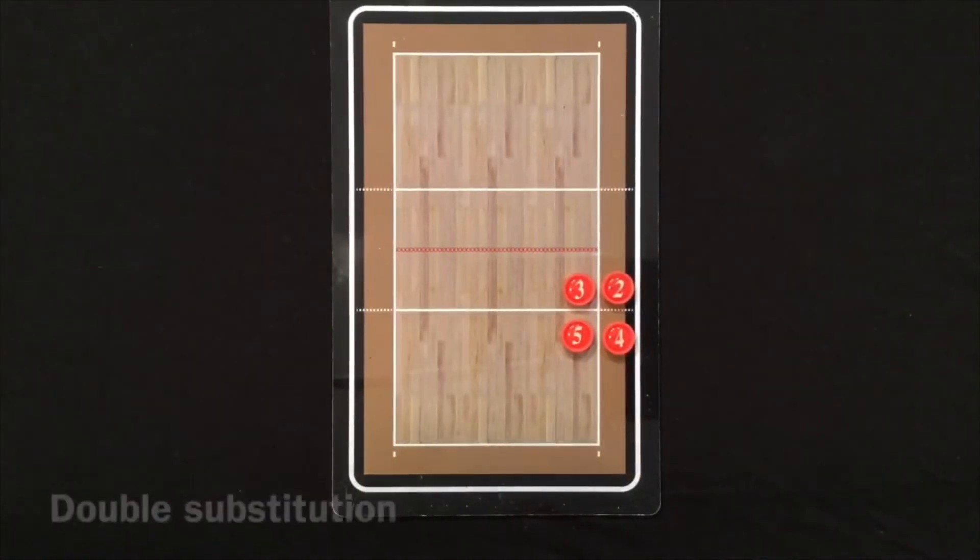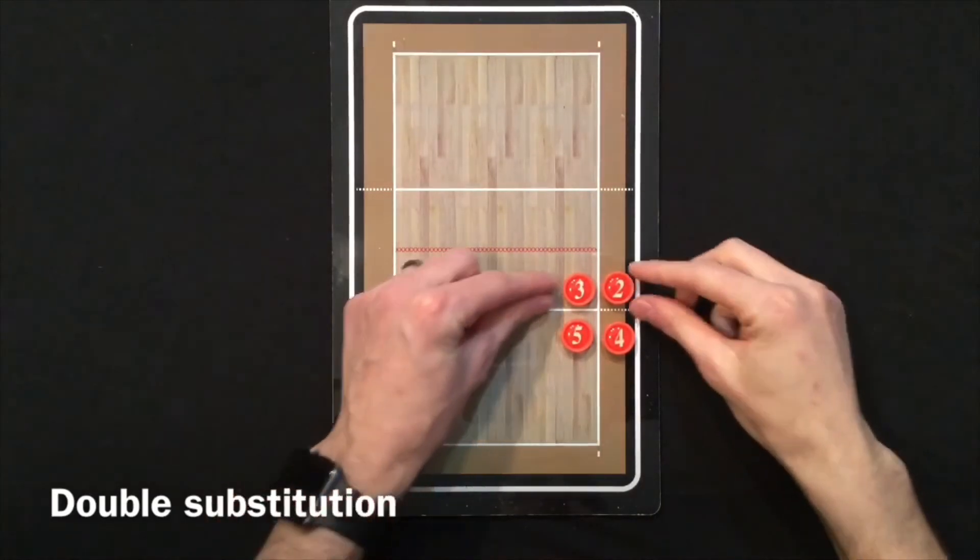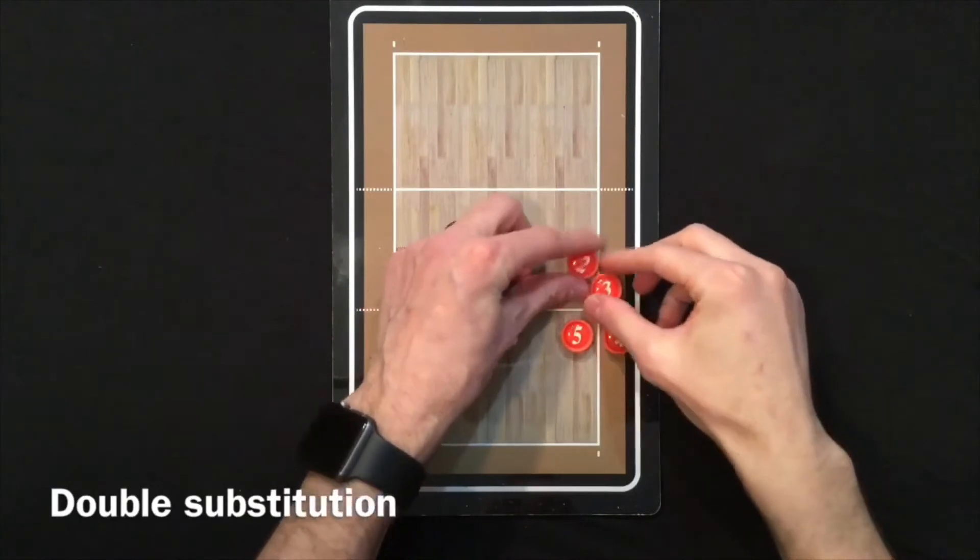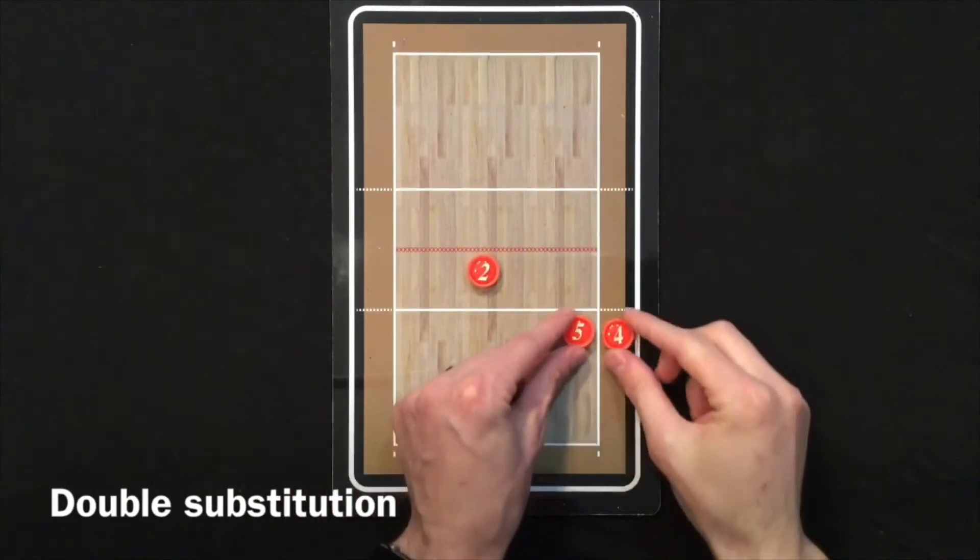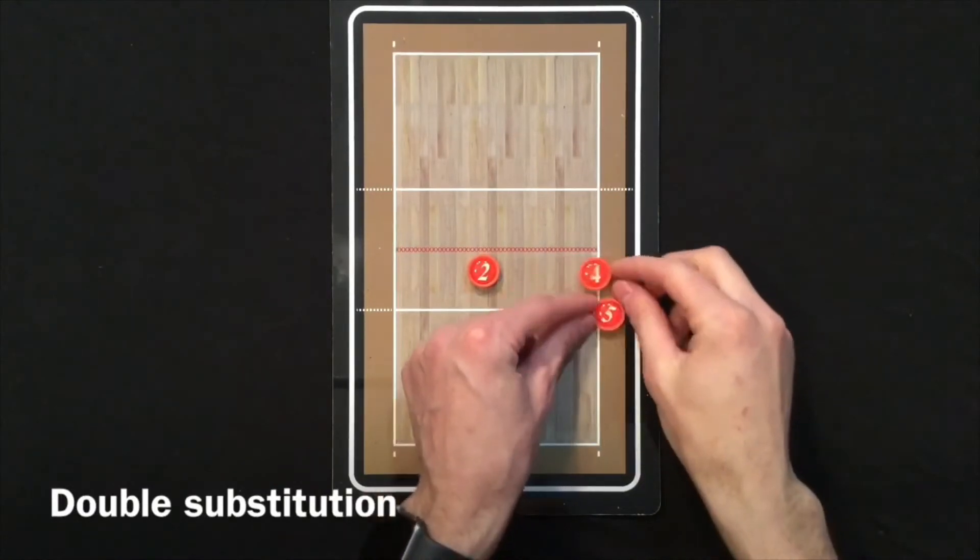Only one player can be in the substitution zone at a time, so this substitution would need to take place first. And then the next substitution pair slides into the substitution zone in order for that one to take place.